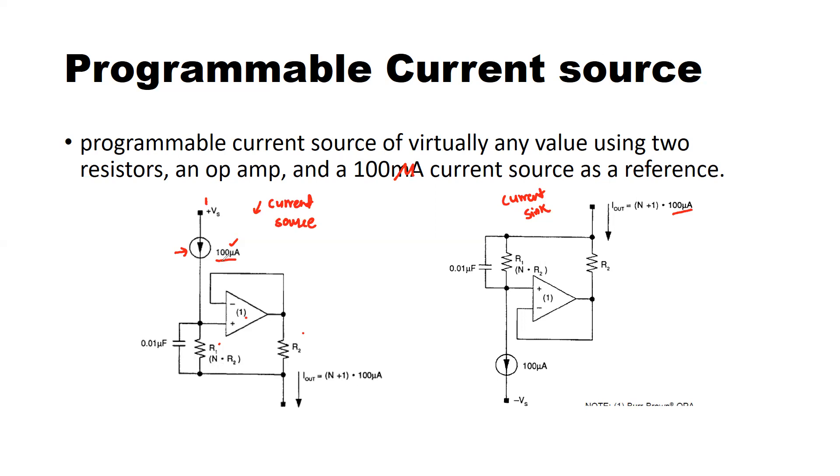That's the value of 100 microampere and this is like a current source assuming it is an ideal current source, which means it delivers a constant current irrespective of changes in the supply or temperature or the process. And it delivers a constant current irrespective of the voltage across it.